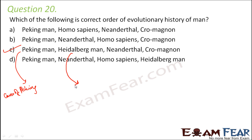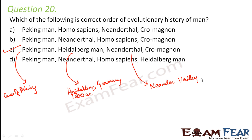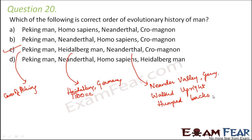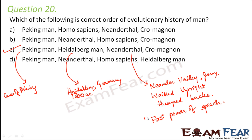Next is Heidelberg man — the fossil jaws of this man were found in Heidelberg, Germany. The brain capacity of Heidelberg man was around 1300 cc. After that came the Neanderthal, first found in the Neanderthal valley, also in Germany. The Neanderthal man walked upright and had humped backs. Importantly, they were the first men to develop the power of speech.